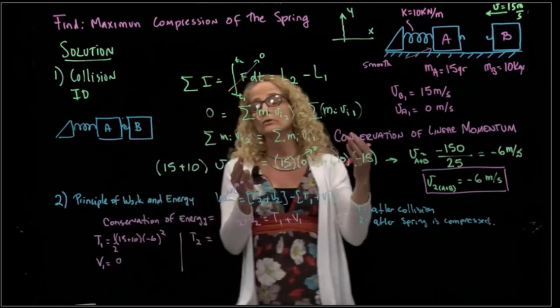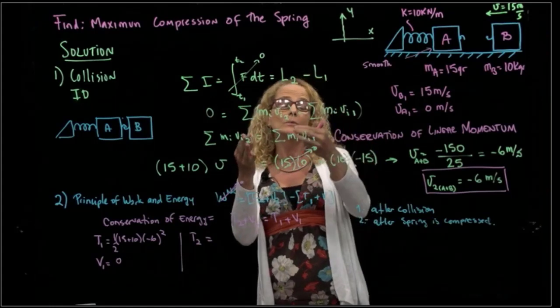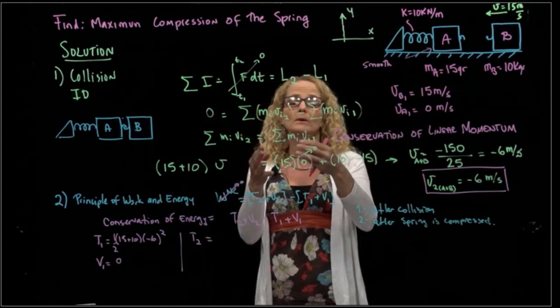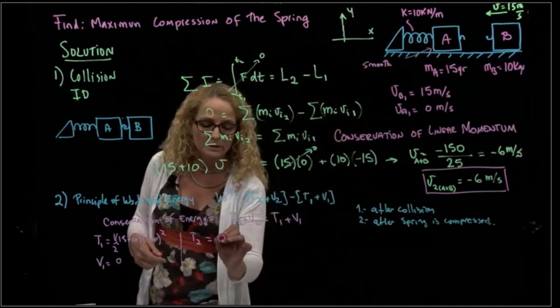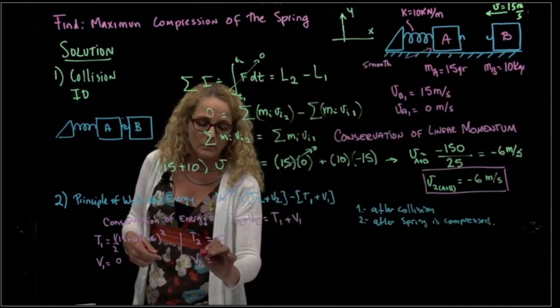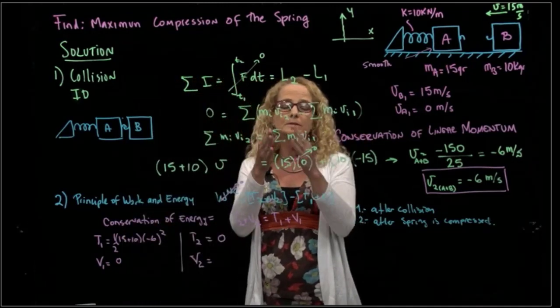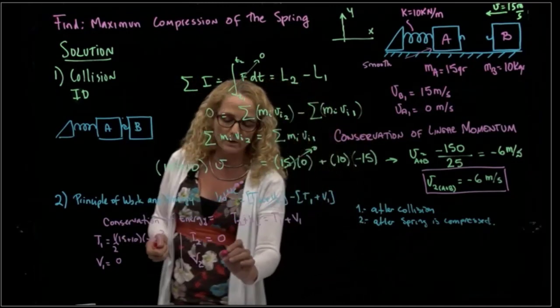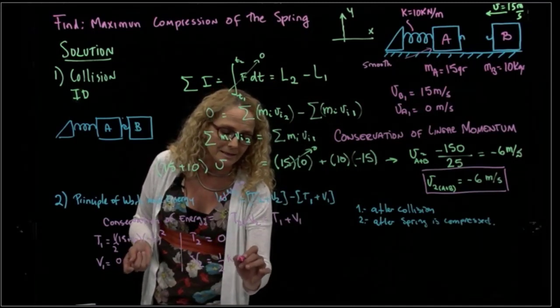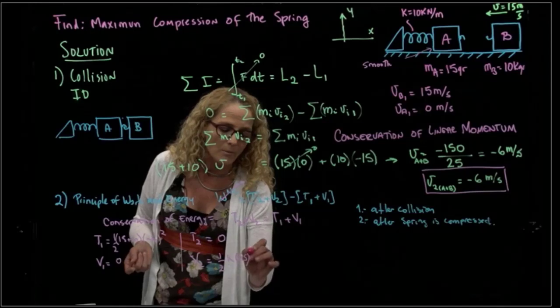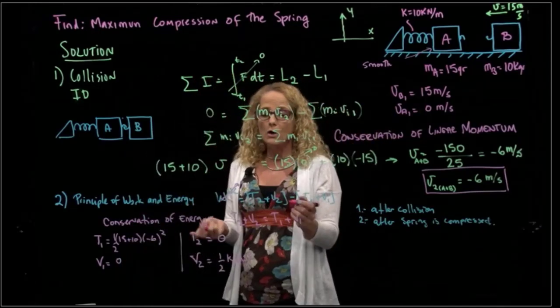Then we have T2, we want to know the maximum compression of the spring. It means when the velocity is zero, because after that, it will start to move in the other direction, so T2 is zero. And V2, which is the potential energy in the second position, is when the spring is absolutely compressed. So we know that it's one half K dot delta S that we want to find. So what is the maximum compression of the spring?